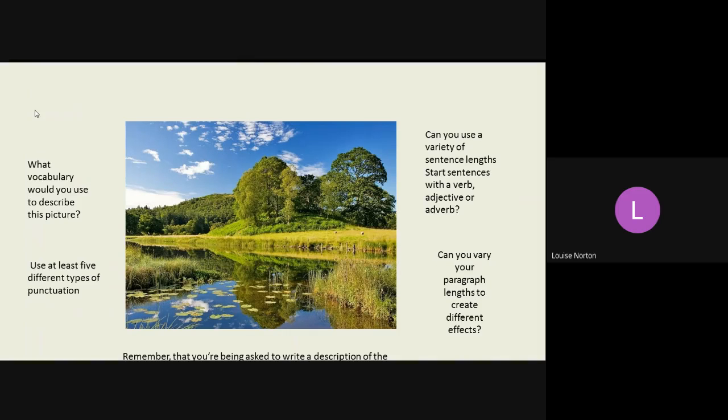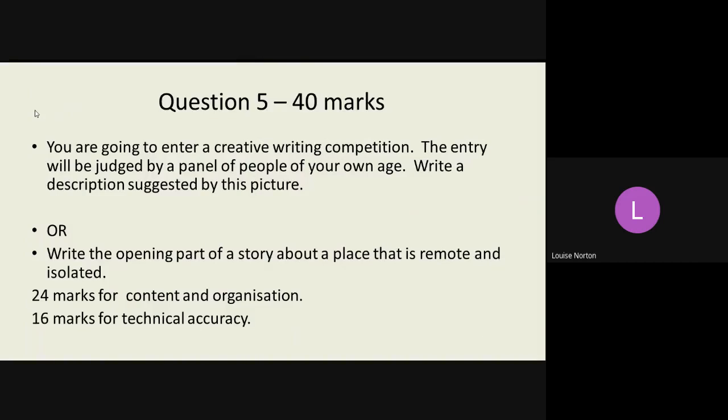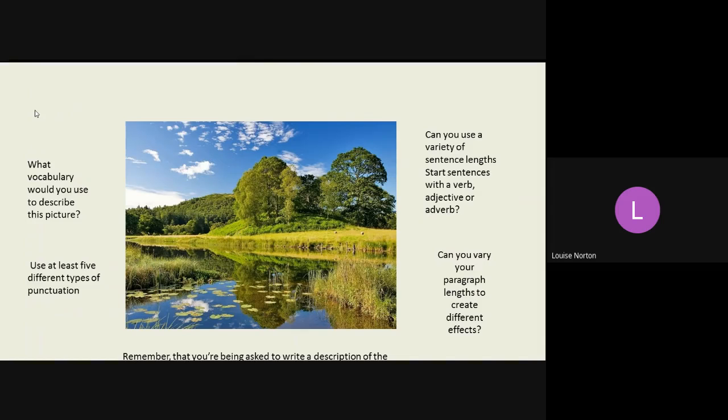So, let's have a look at an image. So, a rural setting. So, we could look at this and think, okay, what vocabulary would you use to describe this picture? You need to remember to use at least five different types of punctuation. Remember 16 marks, spelling, punctuation and grammar. Can you use a variety of sentence lengths? Can you start sentences with a verb, adjective or adverb, rather than just he or she or I? Also, can you vary your paragraph lengths to create different effects?